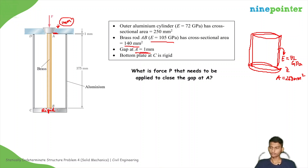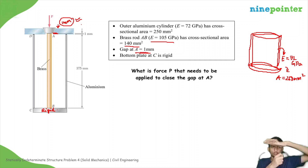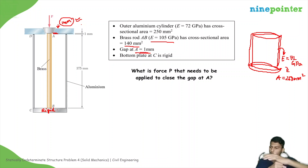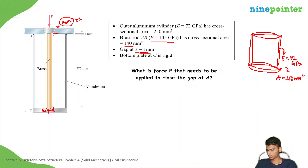So the net movement of the brass rod should be 1 mm. At C, you are applying a compressive force on the brass rod. When it goes down, it will apply a tensile force on the aluminum cylinder. You are applying force T like this.